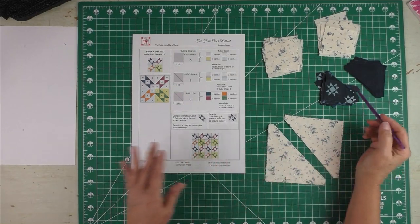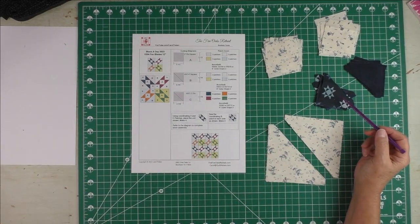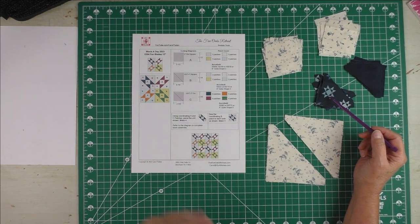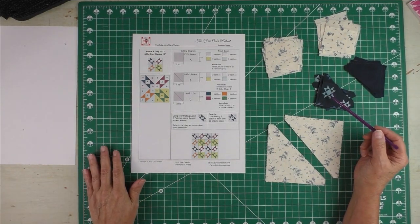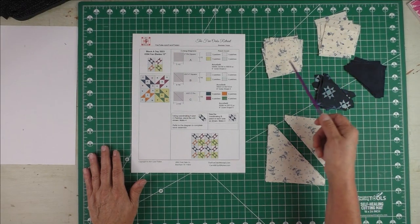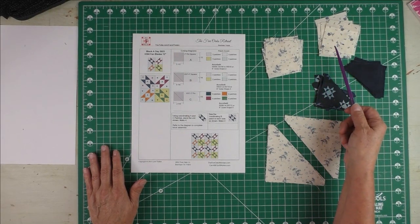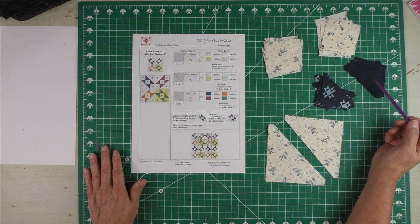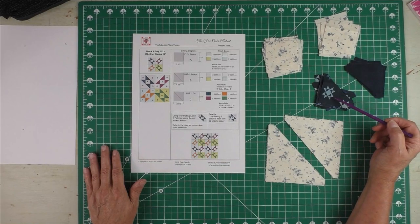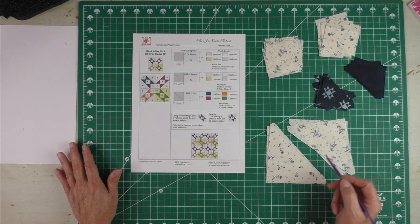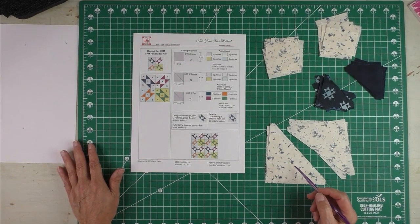I've chosen two background fabrics and I'll make two blocks with this background. Here are the squares, here are the triangles, and I have a solid blue and then a print blue. The same two fabrics up here—we have the large half-square triangles.